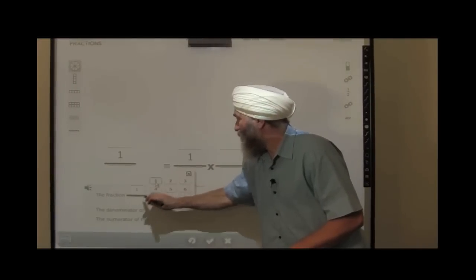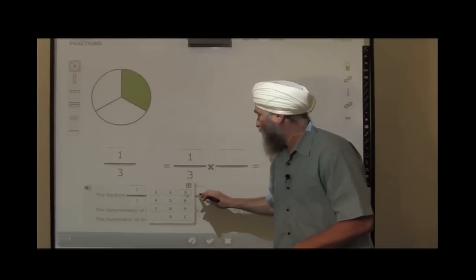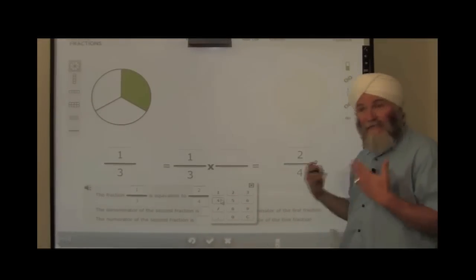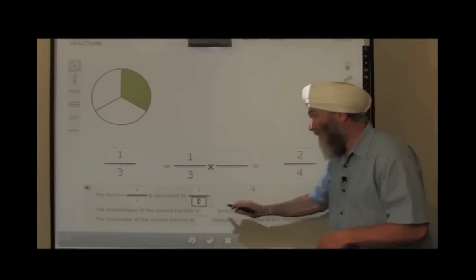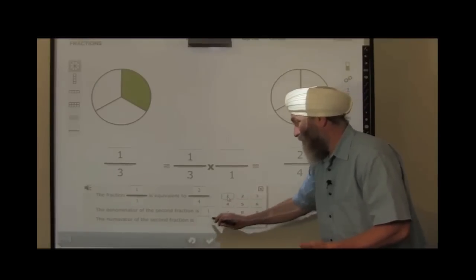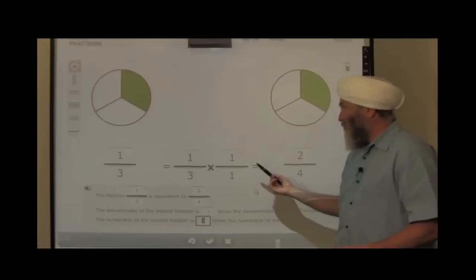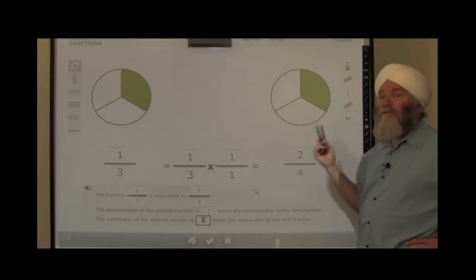If we say the fraction one-third is equivalent to two-fourths, well, that could make sense to somebody. In their mind, they're thinking we're incrementing the denominator by one and the numerator by one. It makes sense. So if you add one to the numerator and add one to the denominator, they're going to realize they don't get the same result.